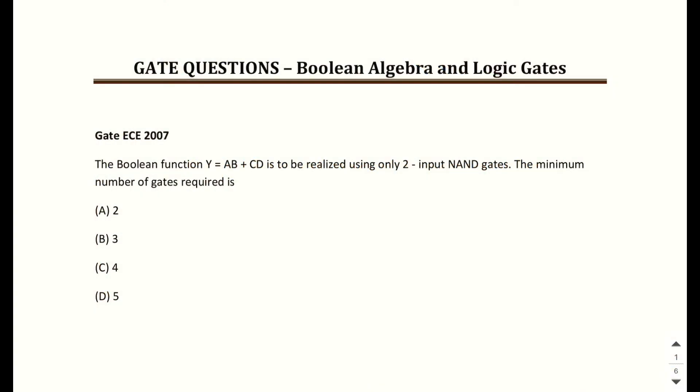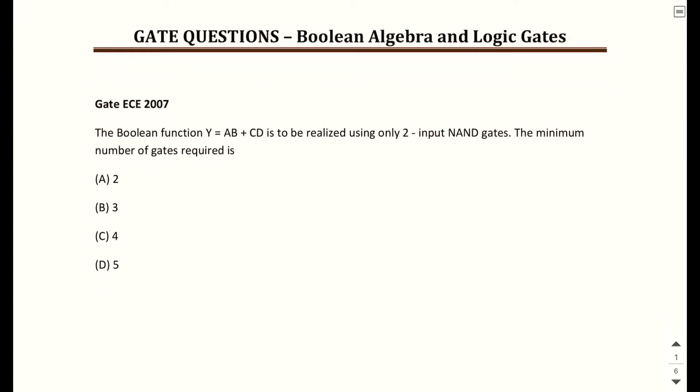The first question is: we have a boolean function y = ab + cd and this has to be realized using only two-input NAND gates. The minimum number of gates required is — we have to select among four options. To solve such questions based on implementing a given expression using the minimum number of NAND or NOR gates, first check whether the expression given is simplified or not. This expression is simplified and we cannot minimize it further, so we just need to start with the implementation.